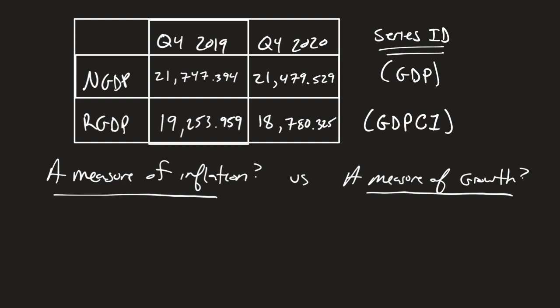So I wanted to go over an example with some real life data. I pulled the fourth quarter of 2019 and the fourth quarter of 2020 from FRED. Here are the series IDs if you want to go back and look. Of course, fourth quarter 2020 is going to get updated a few more times. So when you watch this video, these might be slightly different, but these are being pulled today, which is February 1st, 2021.